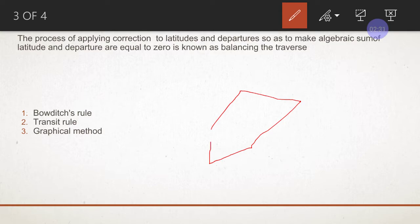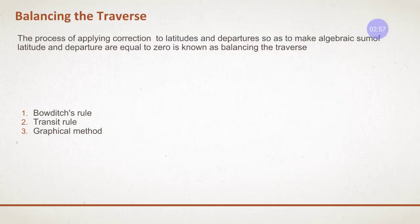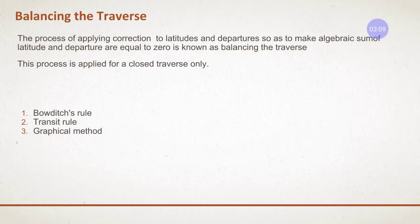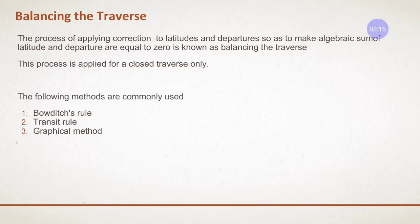When the first and last points are not meeting, there is a closing error. To overcome this closing error and get the proper result, we have to correct it using the method called balancing of traverses — we balance all the sides and their latitudes and departures so that we will have a closed traverse. This process is applied only for closed traverses.